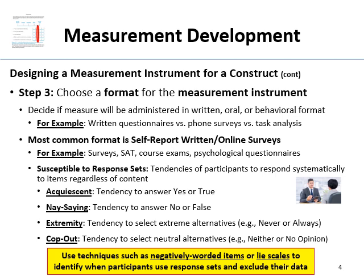To combat response sets, we use techniques like negatively worded items and lie scales. Negatively worded items — for example, on a self-esteem questionnaire, throwing in items like 'I never do anything of any good' or 'I don't really like myself' — help detect people going high or low on all responses, a pattern you wouldn't expect from honest responding. Lie scales, like those in the MMPI, include items that almost no one would endorse as a cluster, designed to detect people faking good or faking bad.